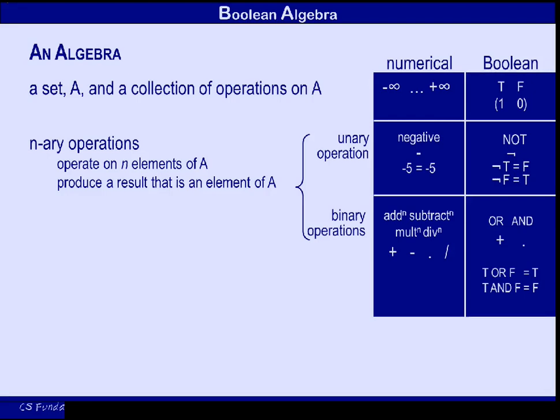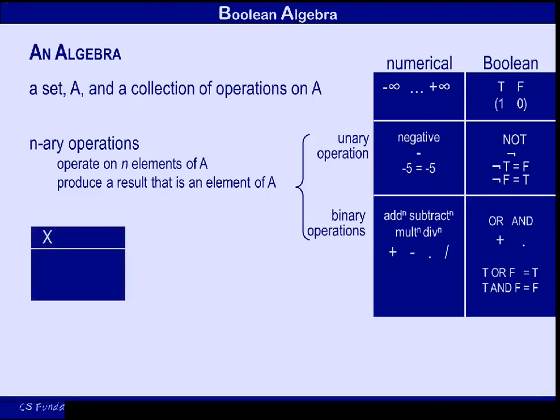Now, in numerical algebra, we have to define the behaviour of an operation in some abstract way, because there are an infinite number of members of the set A. But with Boolean algebra, we can list every possible input combination and every possible output. So, if we have a Boolean variable X, it can take two possible values — false and true. And we can define the unary NOT operator by listing how it behaves for all possible inputs: if X is true, then NOT X is false; and if X is false, then NOT X is true.